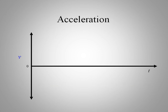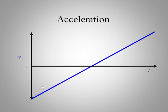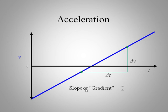What would acceleration look like on a velocity-time graph? Acceleration means changing velocity, so it can't be a horizontal line. Here's an example with a positive slope. If you find the slope — change in velocity over change in time — that gives you the slope of the line, which we recognize as acceleration. So the slope or gradient of a velocity-time graph gives you acceleration.